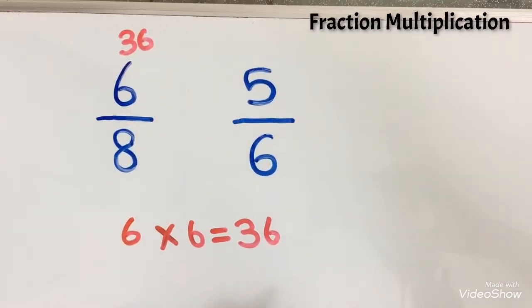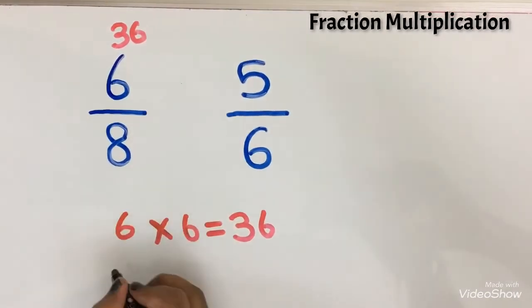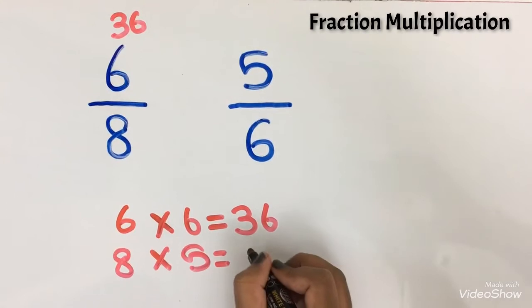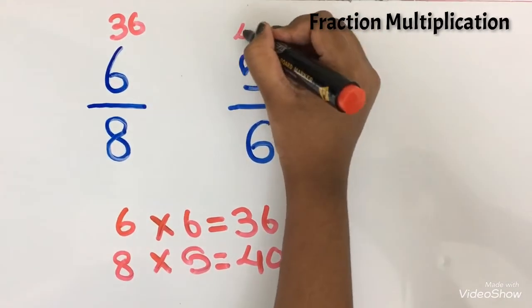Now I am going to multiply 8 into 5. 8 into 5 equals 40. I am going to write 40 over here.